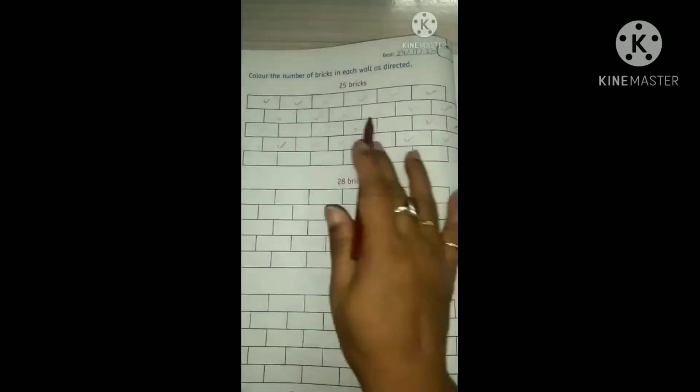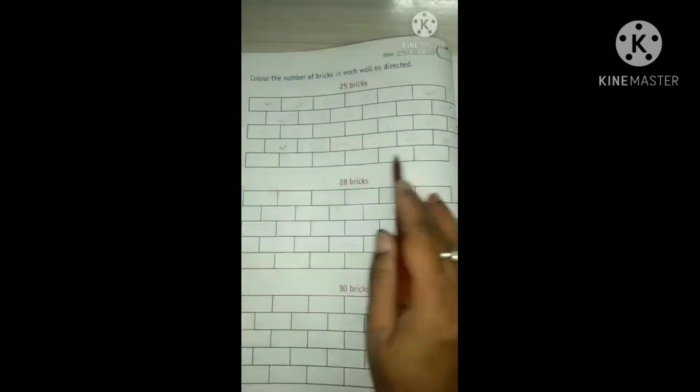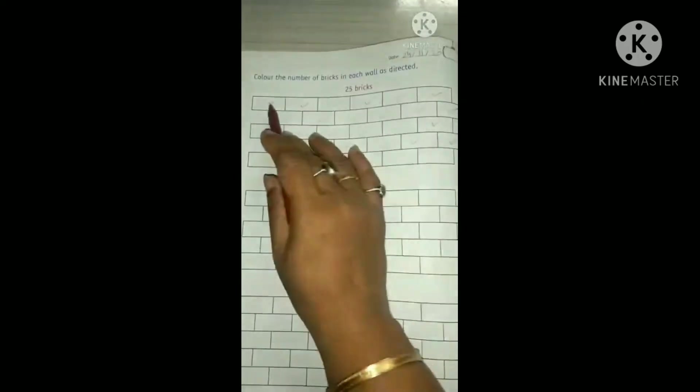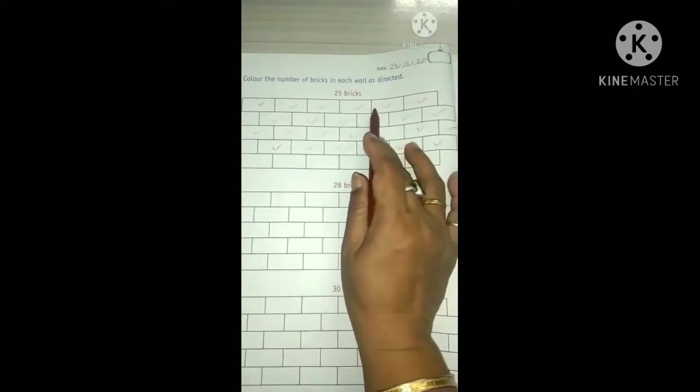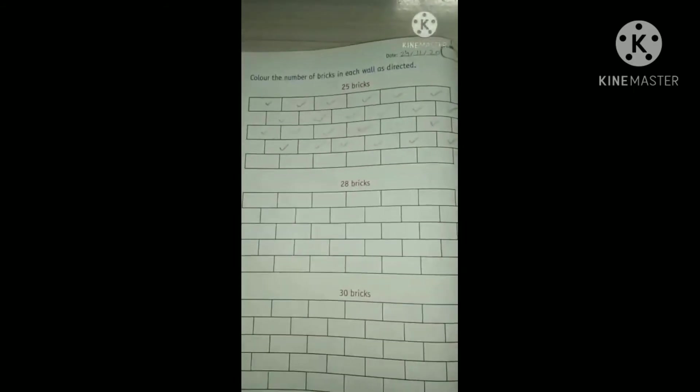So we will color only this much bricks, not this. Okay? So count like this and color these bricks nicely, neatly, okay?